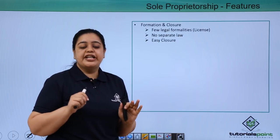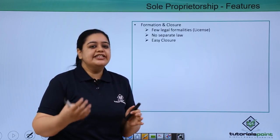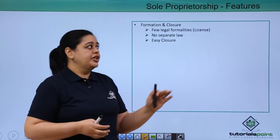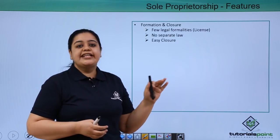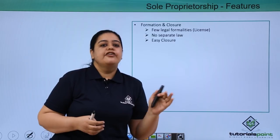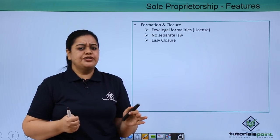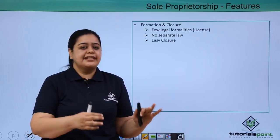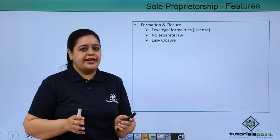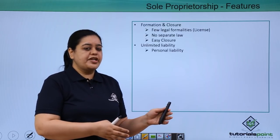There is no separate law on sole proprietorship, so there are no additional formalities for the sole proprietor to look into. Because of this, it is also very easy to close the business. If Rama wants to close Rama's kitchen, all she has to do is wind up the business, sell the assets, and the closure is done.